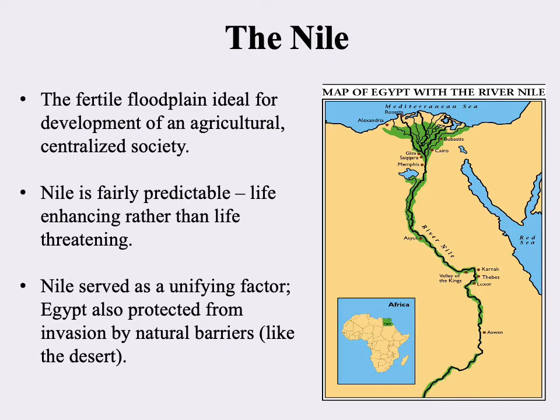At the same time, the Nile Valley is surrounded by desert, and to the north you have the Mediterranean Sea. In a way, civilization was allowed to develop unmolested there because of these natural barriers — the desert, the sea, and so forth — meaning Egypt was not subjected to attack from other people, unlike Mesopotamia, where very often people are just passing through.